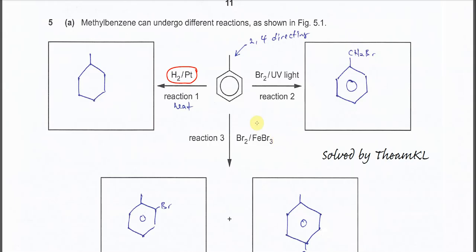For reaction two, halogen with UV light — this is free radical substitution. It involves the methyl group, and one of the hydrogens in the methyl group will be substituted by bromine to form CH2Br. This is the product after free radical substitution.